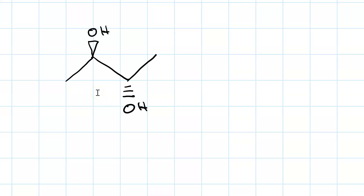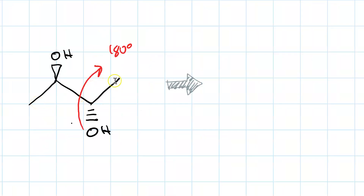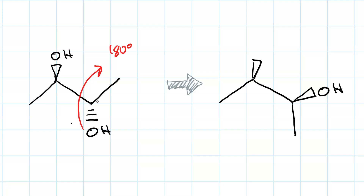What about this molecule? Clearly, there's no mirror plane as drawn. But remember, free rotation is allowed around any single bond. That means I can rotate the carbon on the right 180 degrees. So instead of going flat up, this methyl group will be going flat and straight down. And this hydroxyl group, instead of going down and away from me, will be coming up and towards me. My new image of the molecule will look like this — there's my methyl group going straight down, here's my hydroxyl group coming up and towards me, here's my initial hydroxyl group. And now you can see the mirror plane. Believe it or not, this molecule is meso.